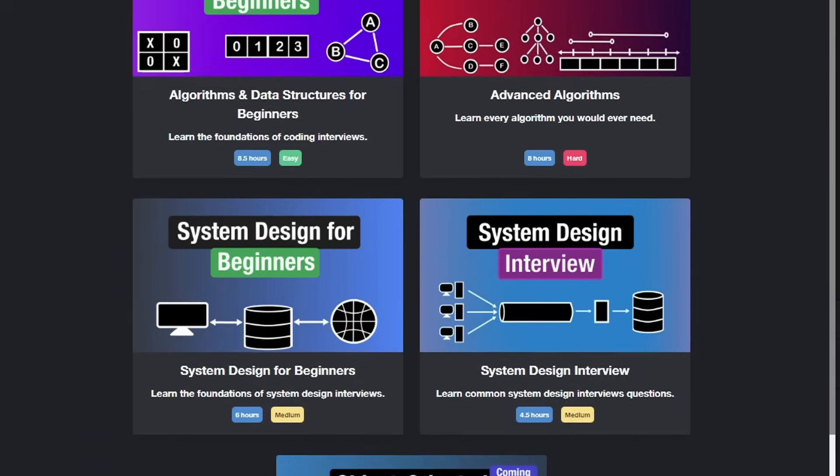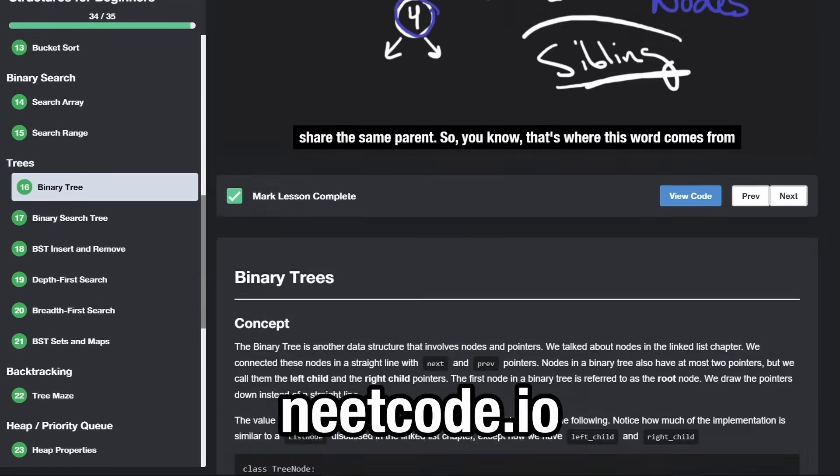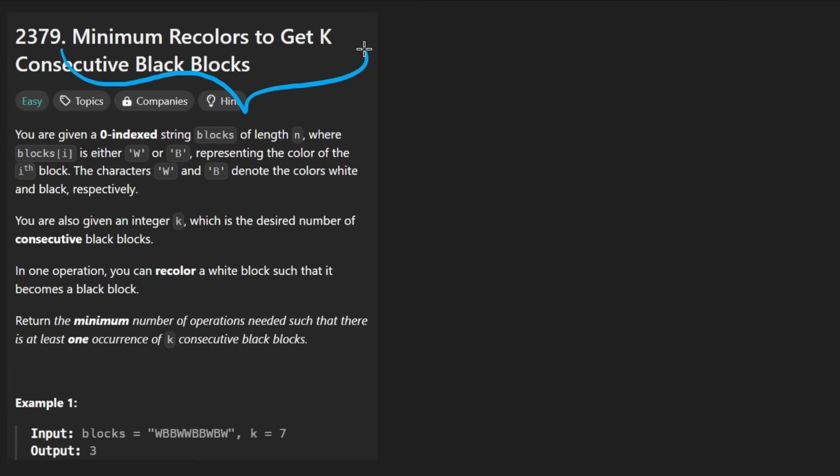Everyone, welcome back. Let's write some more neat code today. So today let's solve the problem minimum recolors to get k consecutive black blocks. Again, like kind of a long problem description for how simple of a problem that this is.